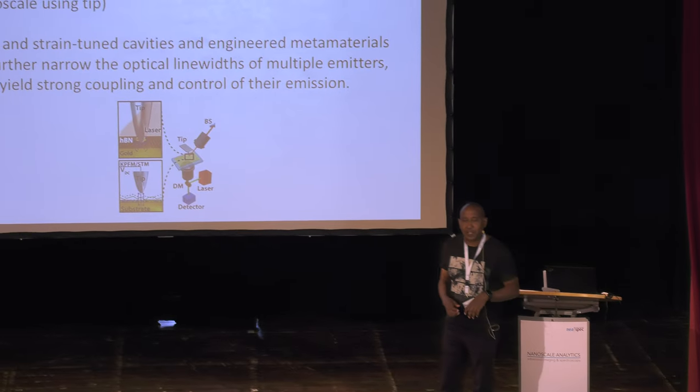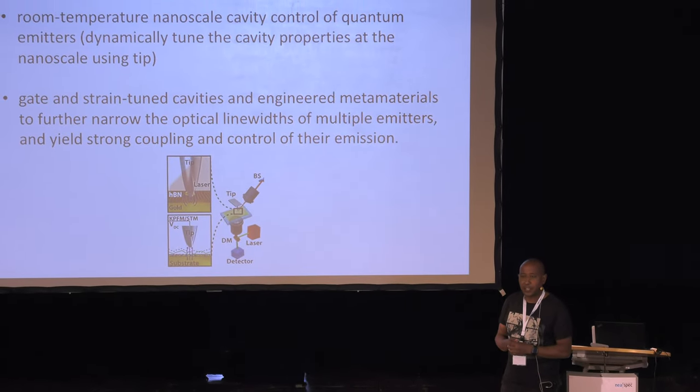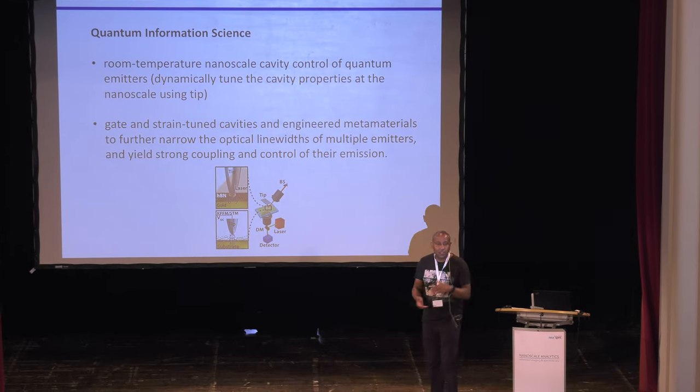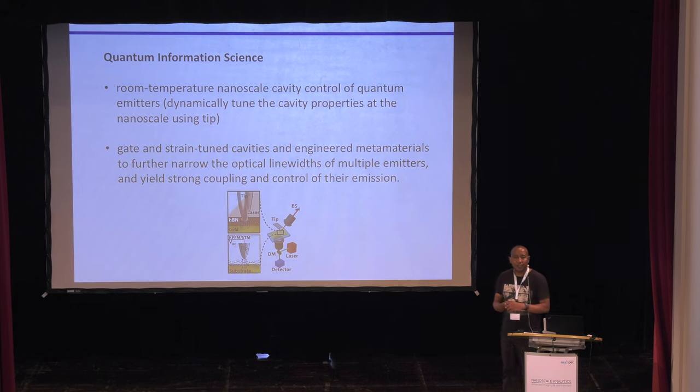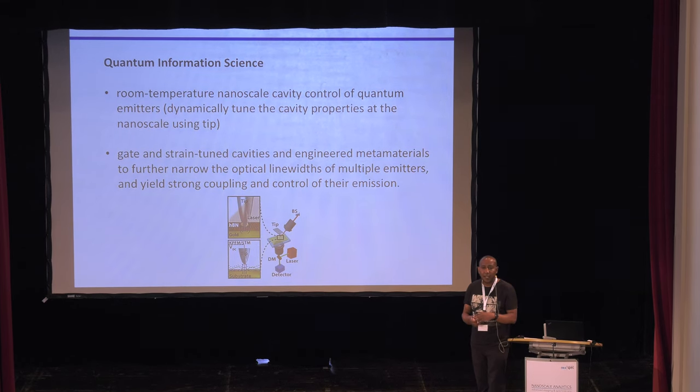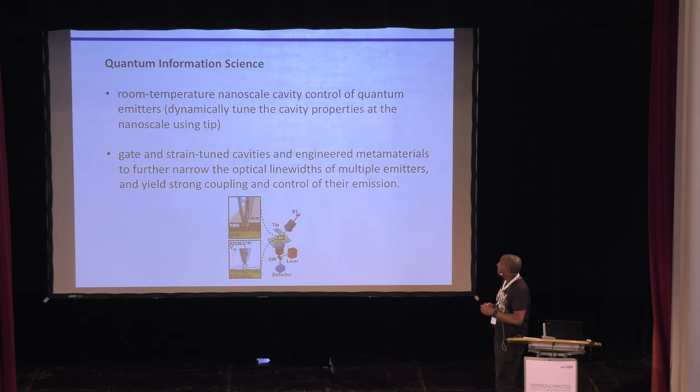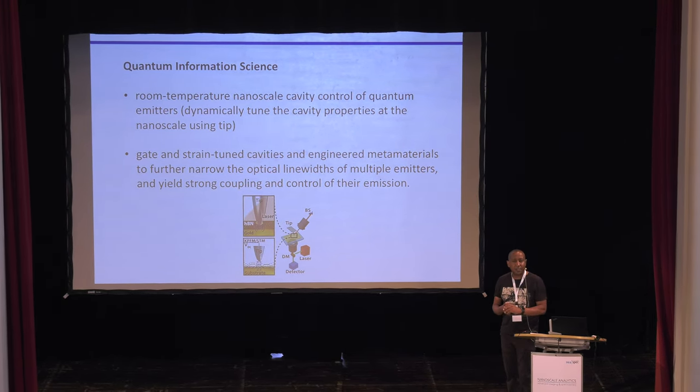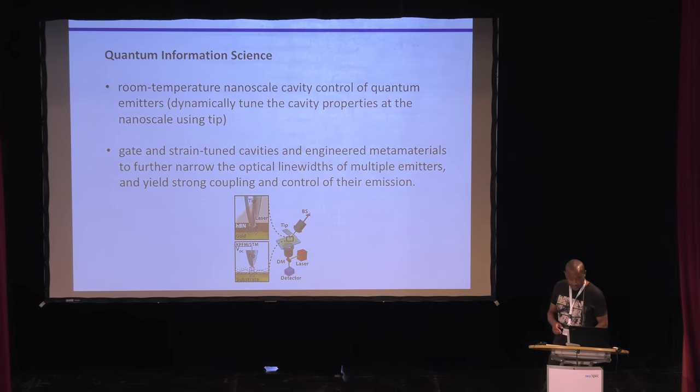I'm going to show you just a few examples of these two. In particular, I'll show you one slide on how we can use TIP-enhanced photoluminescence to do biological stuff. We just started doing that. Just a little bit more on quantum information: one is interested in single photon emission and entanglement. What could the TIP do? One can use the TIP to create a cavity between a surface and the TIP itself, enhance the signal, as well as tune and control single emitters.